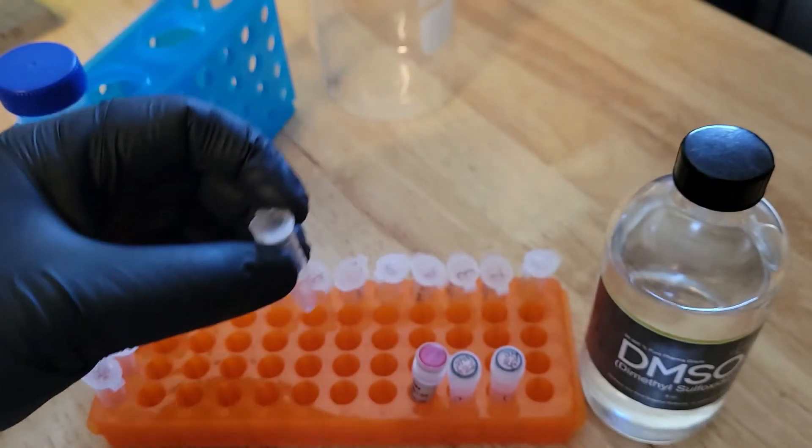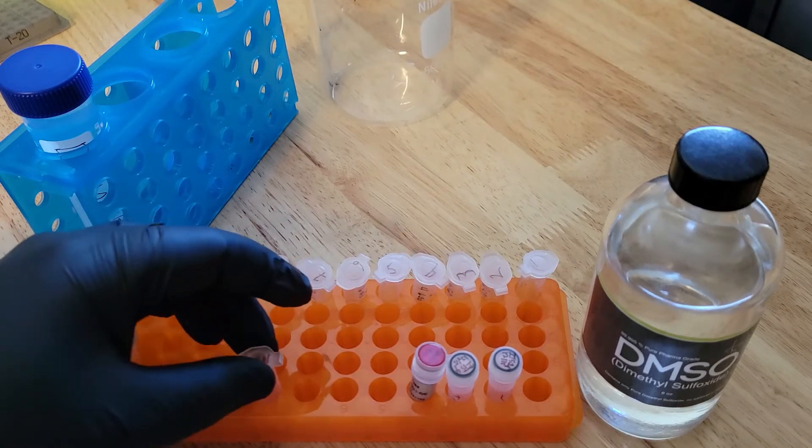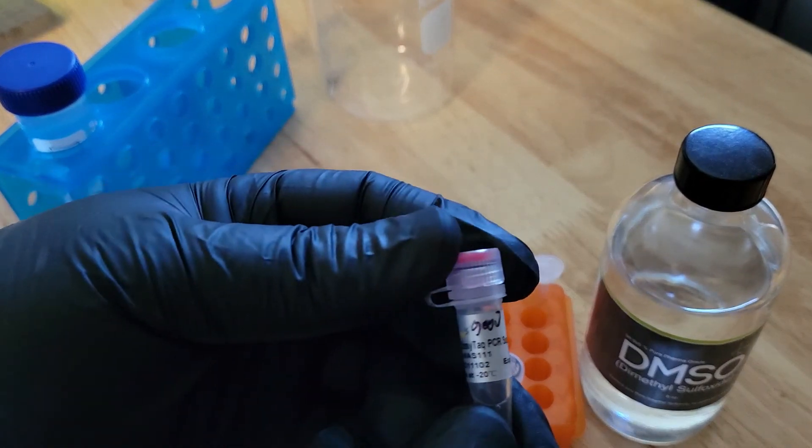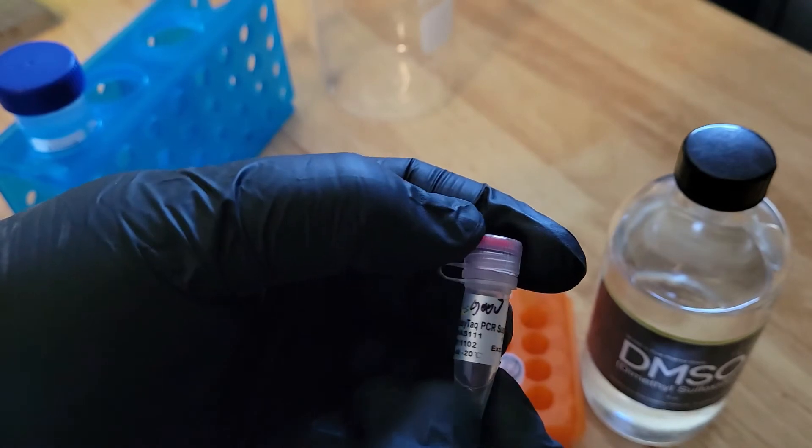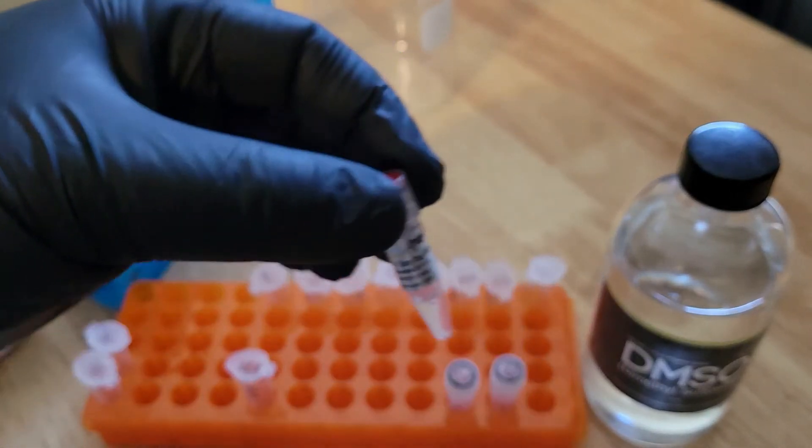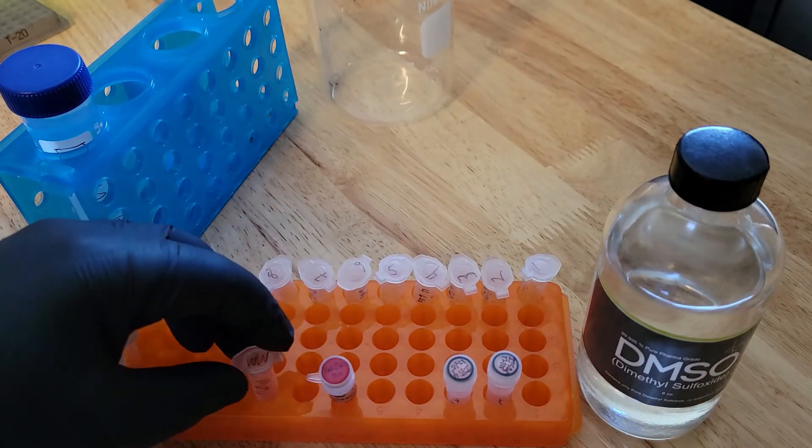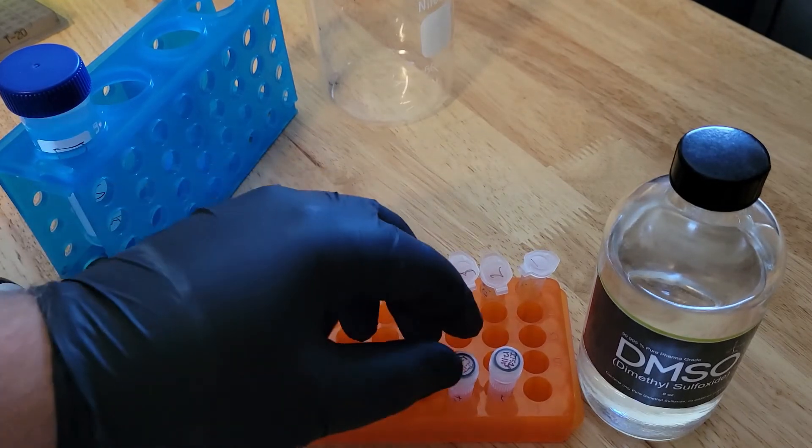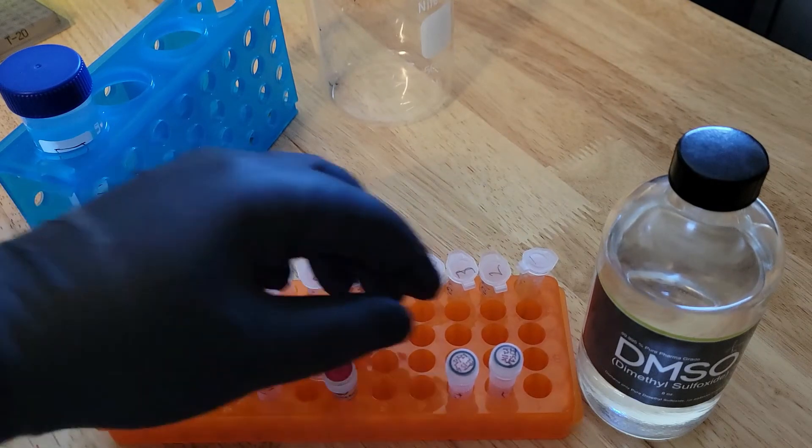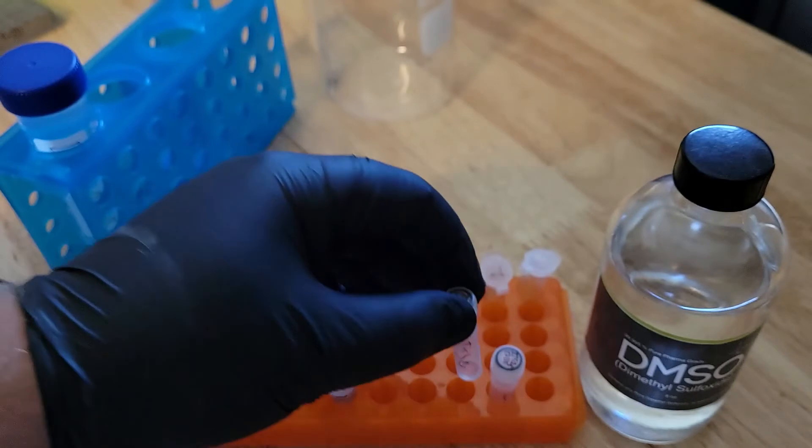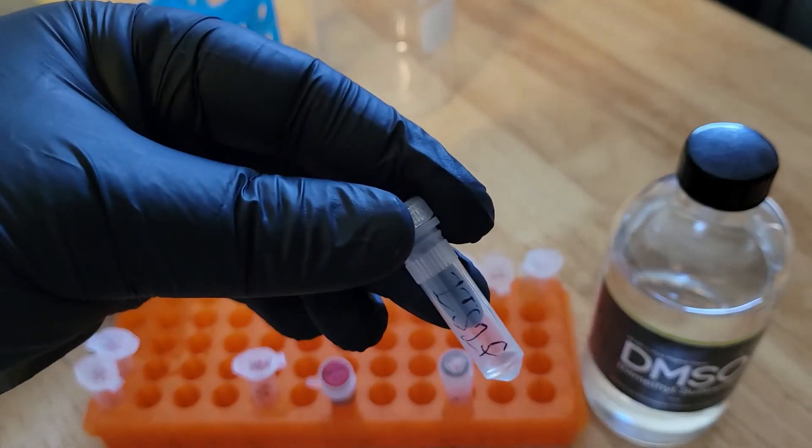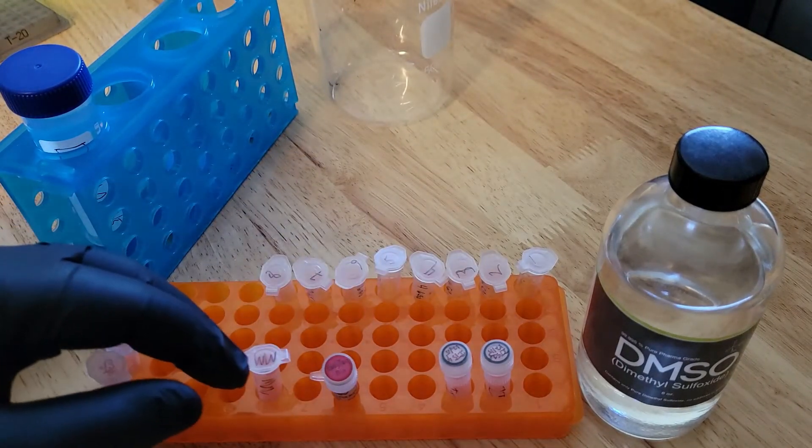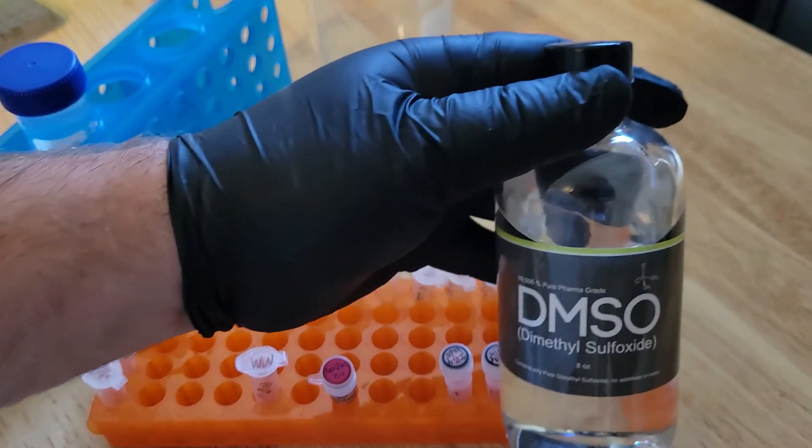We're going to make our master mix. I'm not going to show you the pipetting part, but here's the main ingredient. This is our 2X PCR master mix. It includes some magnesium chloride, the Taq polymerase, and then each of the four nucleotide bases. In this case, they're in their triphosphate form. Then I've got the ITS4 reverse primer.